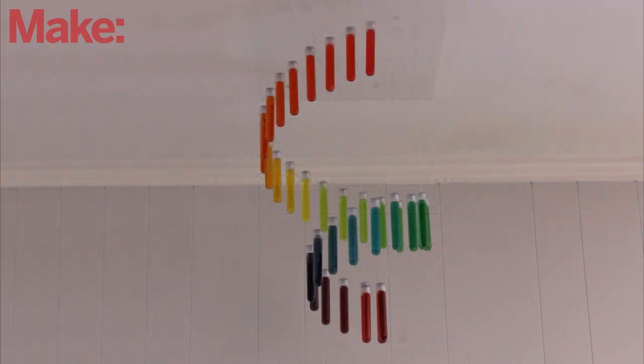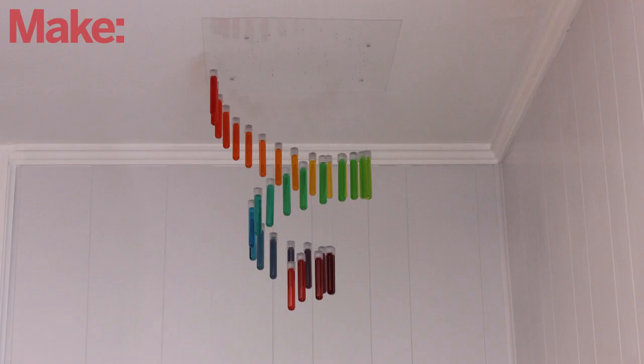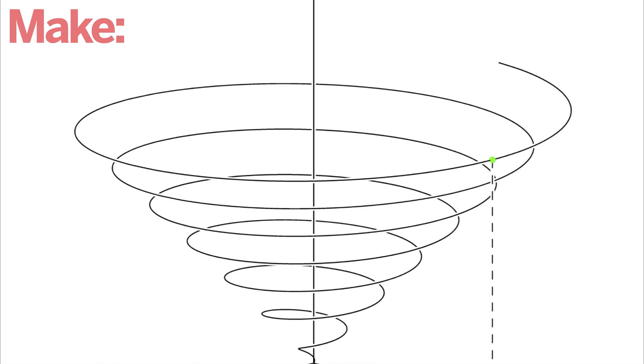This week I'm going to show you how to make a simple chandelier using test tubes of colored liquid. The first thing that you need to do is decide on the overall shape of your chandelier. I chose a basic descending spiral pattern.